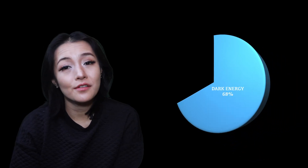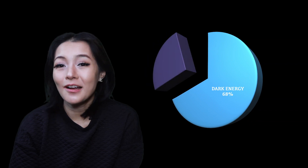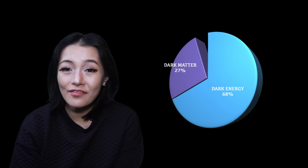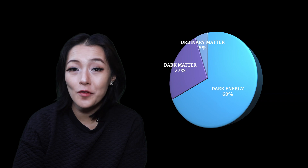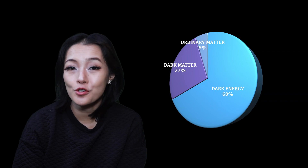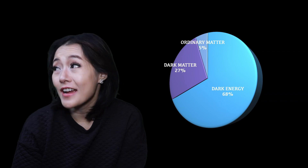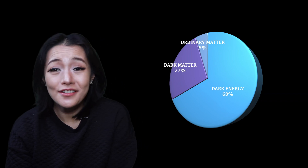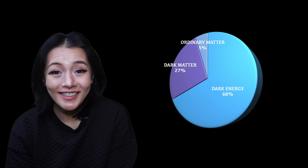When we talk about the composition of the universe, dark matter makes up about 27% of its total content, dwarfing the mere 5% of ordinary visible matter. The rest? Well, that's another story — dark energy.